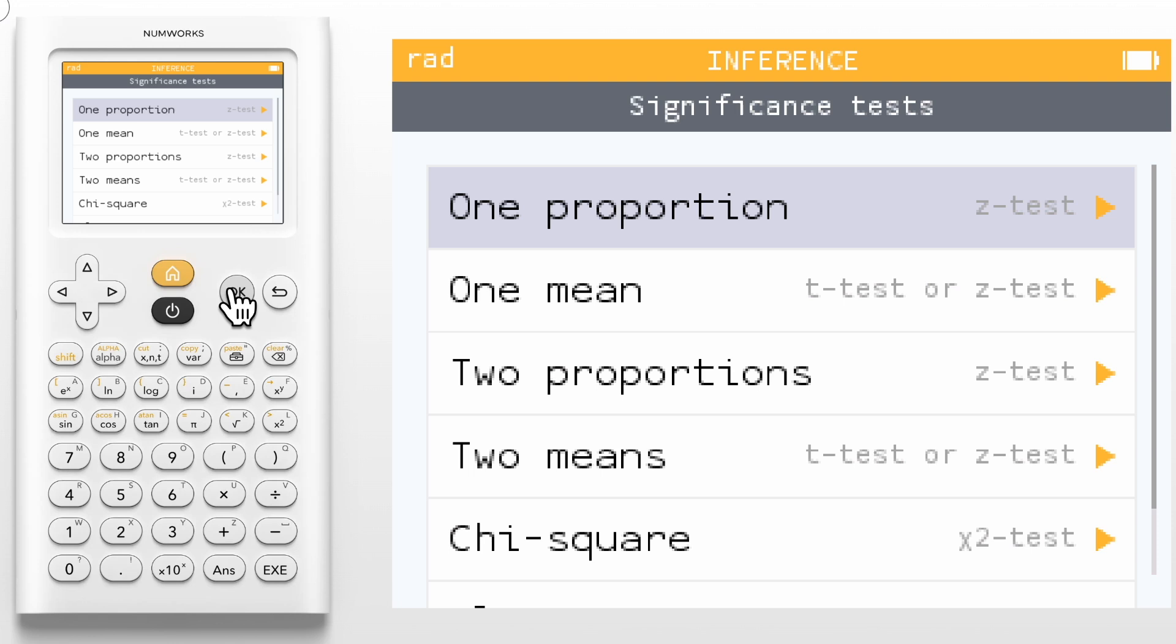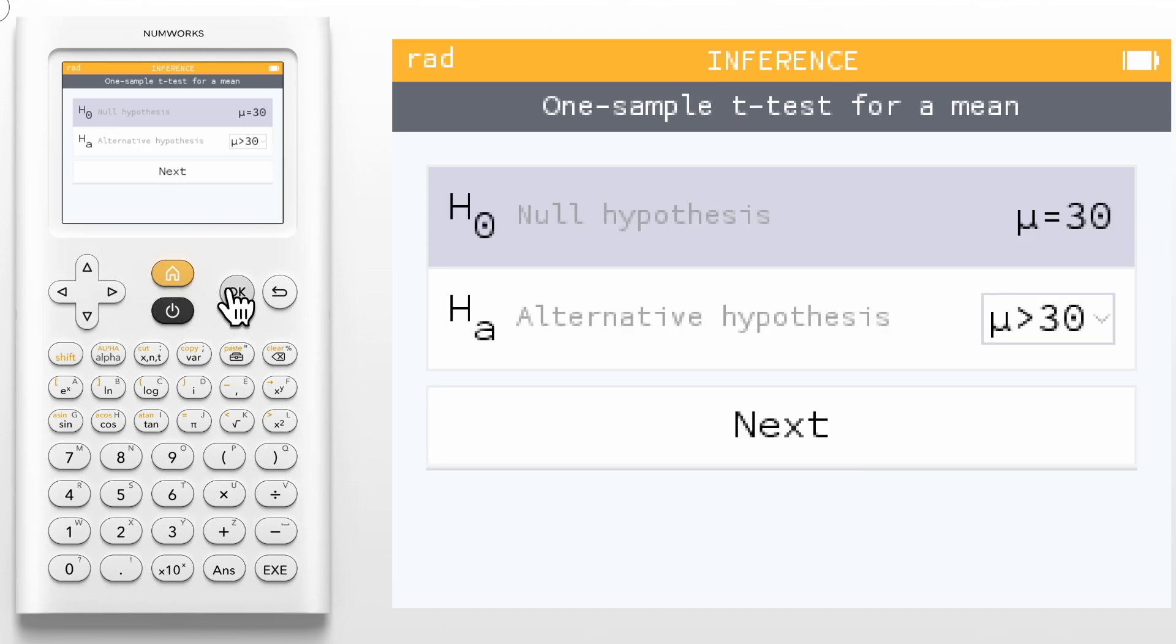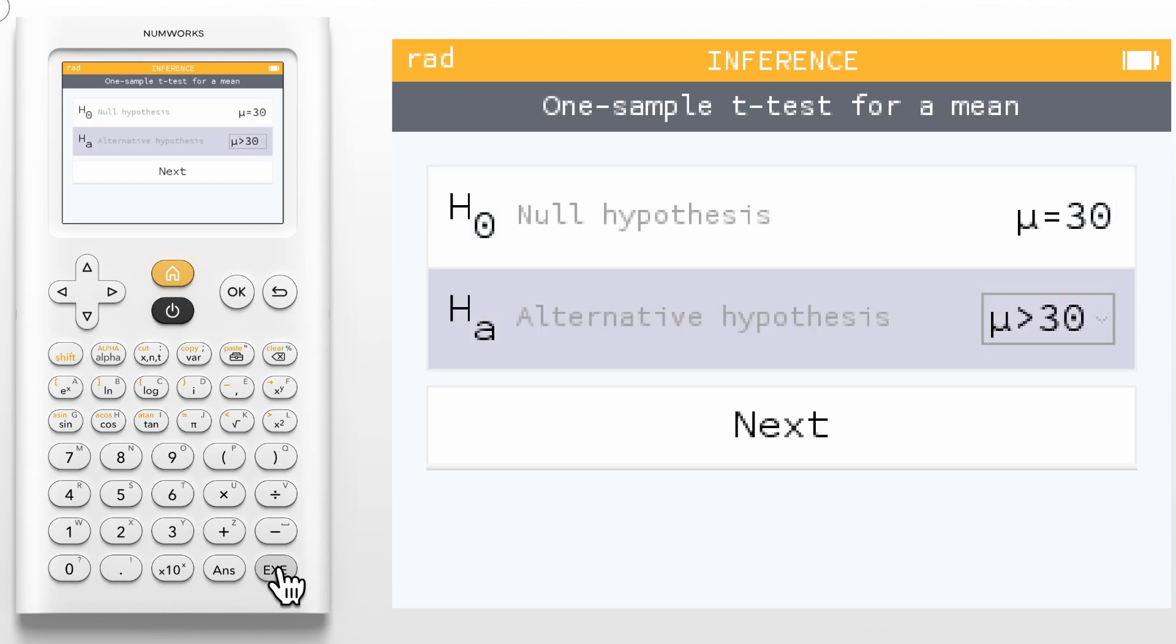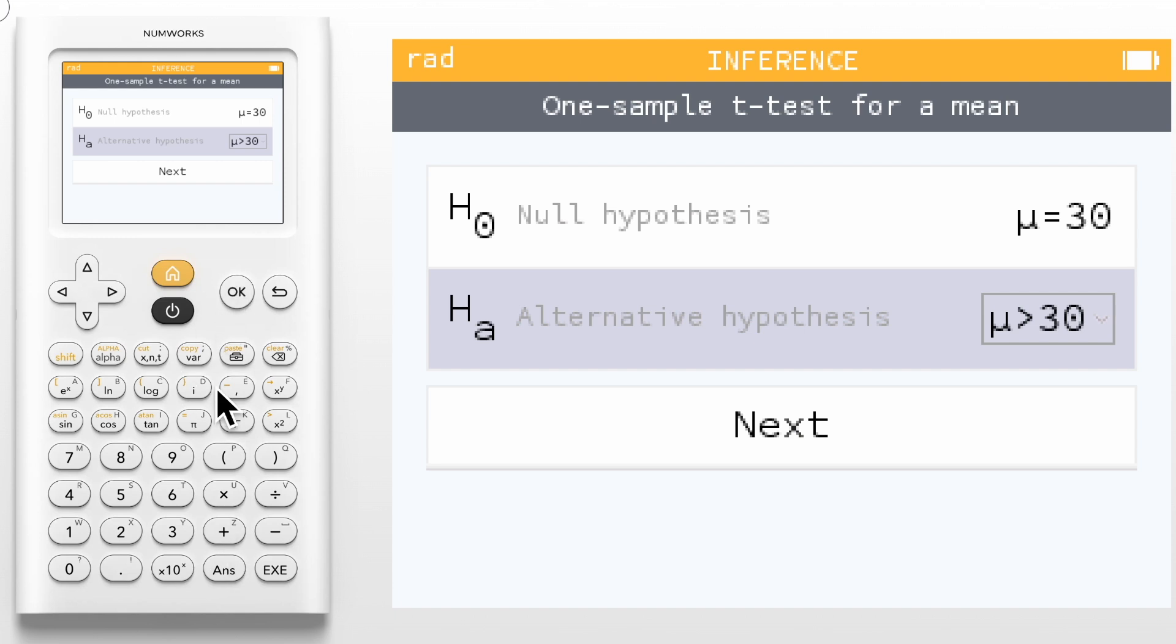let's say if we want to test if a new battery has a lifetime of more than 30 hours as advertised using data from 15 randomly selected AAA batteries from a company. To do this, we'll select one mean. Because we don't know the population standard deviation, we'll need to select a t-test. The first things we enter are our hypotheses. You can start to edit right away by using the number keys and the alternative hypothesis is updated automatically. For this example, we will want to see if the true mean lifetime of these batteries is more than 30 hours. For the null hypothesis, we'll enter 30. We can adjust the direction of the alternative hypothesis by clicking OK when it is highlighted. From the drop-down box, we will change the direction to greater than. Now click next.